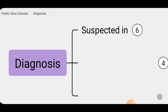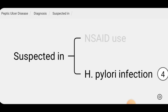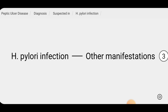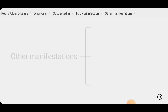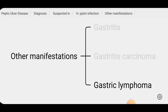The diagnosis of peptic ulcer disease is suspected in patients with dyspepsia, especially in the setting of non-steroidal anti-inflammatory drug use or a history of Helicobacter pylori infection. H. pylori is a bacterial species that can infect the stomach lining and cause chronic inflammation, leading to various gastrointestinal diseases including gastritis, gastric carcinoma, and gastric lymphoma.